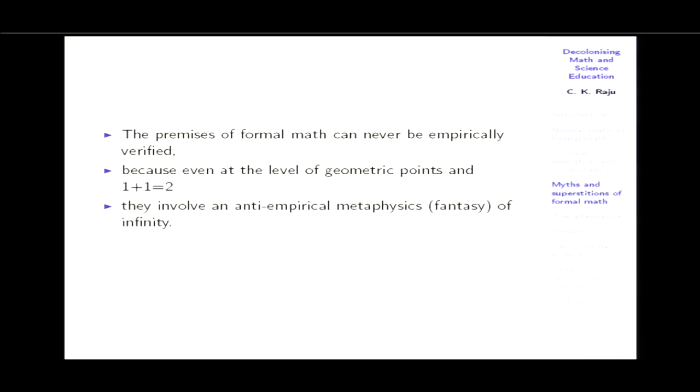The Lokayat school in India accepted empirically manifest inference but rejected inference from unverifiable premises. Their stock example was the wolf's footprint: a man made footprints from a village gate to the central square; in the morning people said a wolf was around, not realizing a person made them. That's what happens if your postulates are not empirically verified. You cannot verify the premises of formal math — whether geometric points or 1 + 1 = 2 — because everything involves an anti-empirical metaphysics, what I have explained as the fantasy of infinity.